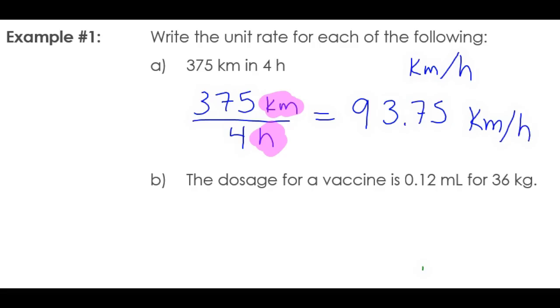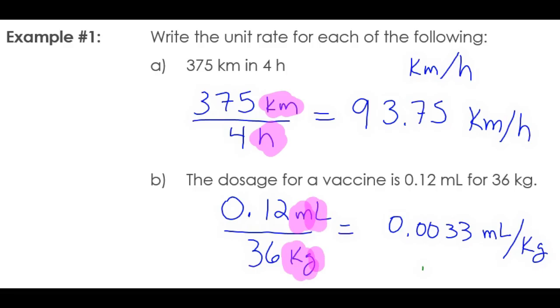Sometimes you want to know the unit rate for dosing medication for easy conversion no matter how much a person weighs. In this case, a particular vaccine needs 0.12 milliliters per 36 kilograms. That works if you weigh exactly 36 kilograms, but you might want to know per kilogram what your dosage is. 0.12 divided by 36 kilograms tells me I need 0.0033 milliliters per kilogram. Milliliters divided by kilograms—that's how I know my unit rate is milliliters per kilogram.